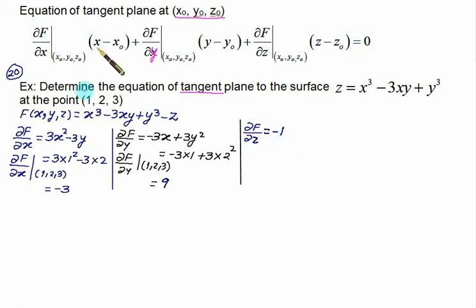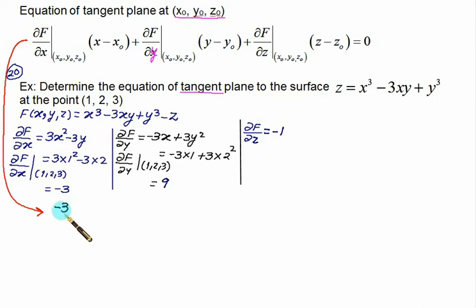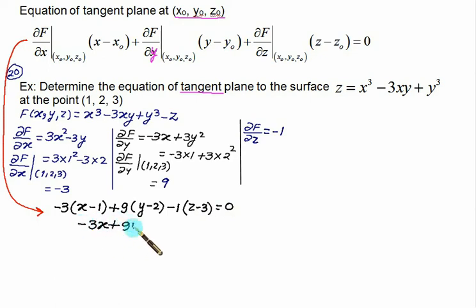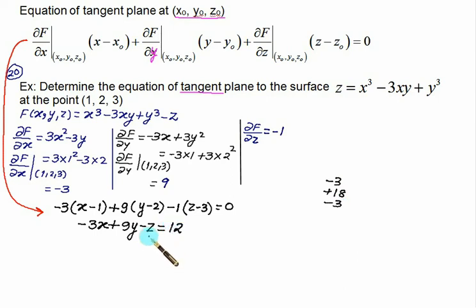Now use the tangent plane equation with the derivatives evaluated at (x₀, y₀, z₀) = (1, 2, 3): (−3)(x − 1) + (9)(y − 2) + (−1)(z − 3) = 0. Expanding: −3x + 9y − z, and the constant rearranges to give +12. So the equation of the tangent plane to z = x³ − 3xy + y³ is −3x + 9y − z + 12 = 0.